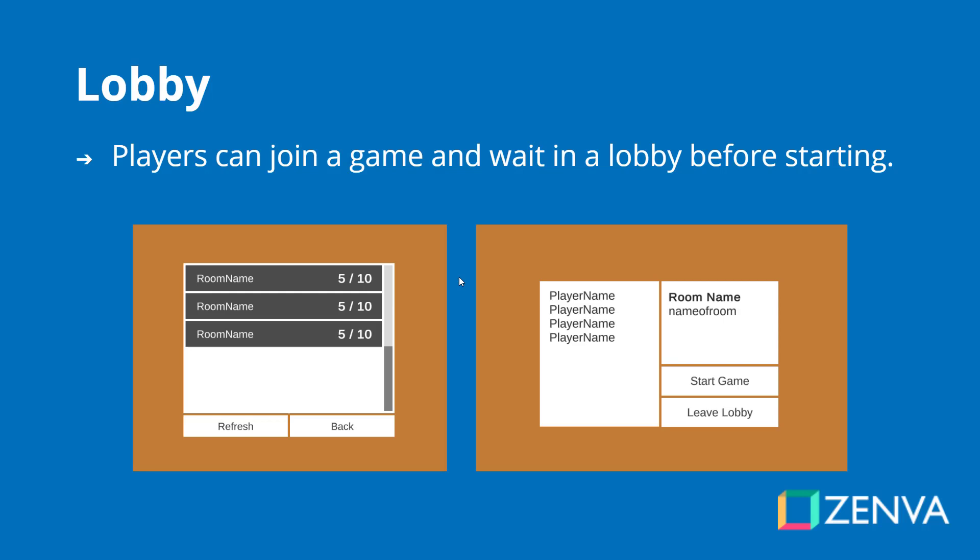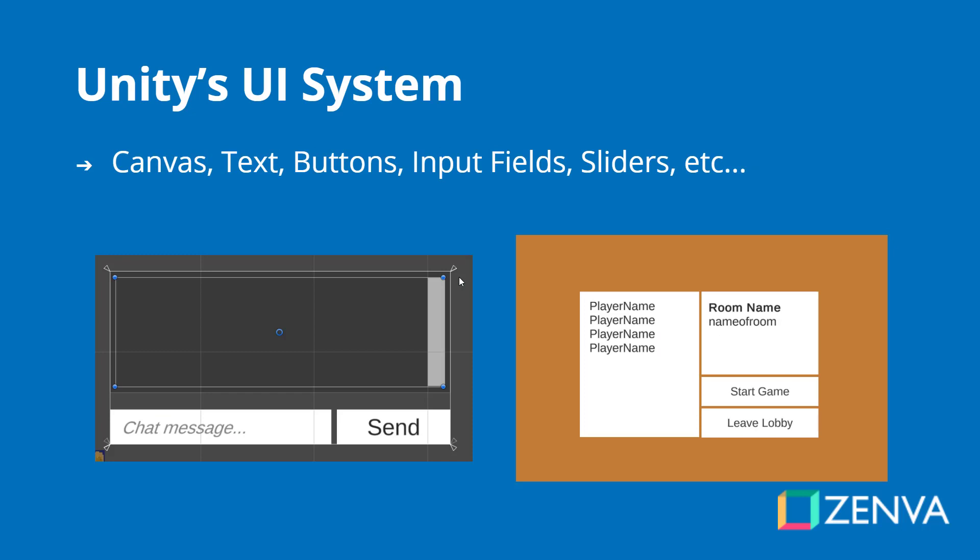When all the players are in the lobby you can see who is in there and then you can start the game. We will be doing all this with Unity's UI system. Unity has a very good built-in UI system that we will be using. We will be talking about canvases, text, buttons, input fields, sliders — all the different sorts of UI elements. We will be using a wide range of different ones.